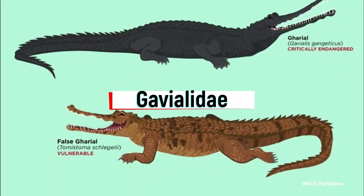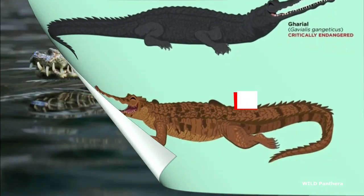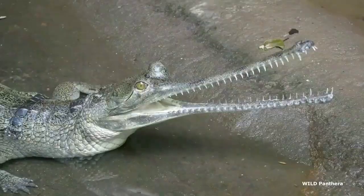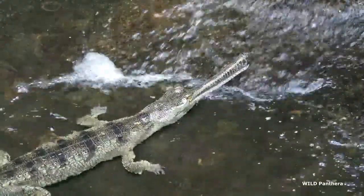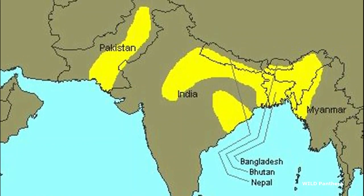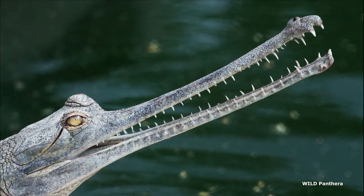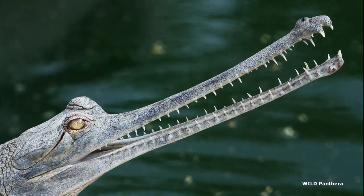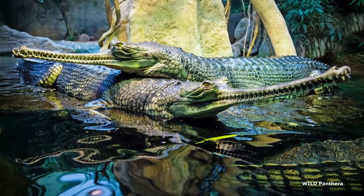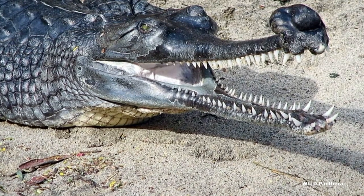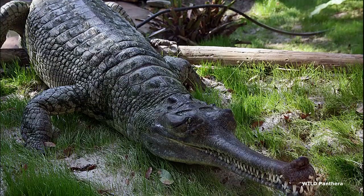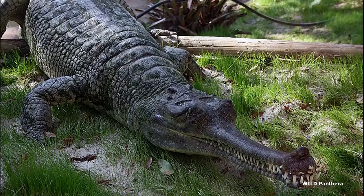The two distinct species of Gavialidae are: 26. Gharial — Gavialis gangeticus is the fish-eating crocodile from the northern Indian subcontinent, including India, Nepal, Bhutan, and Myanmar. This is the longest freshwater crocodile, about 20 feet in length. The name Gharial comes from the Indian word 'ghara,' an earthenware pot used to store water, which resembles the boss at the end of the snout of adult males. It is listed as critically endangered.